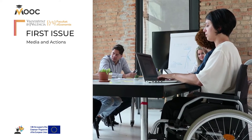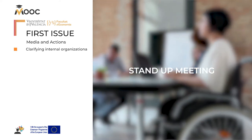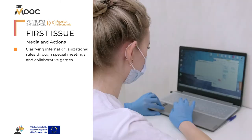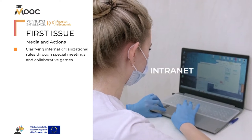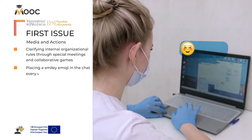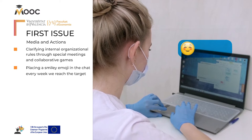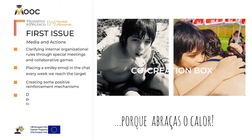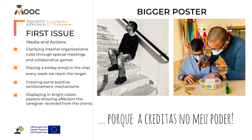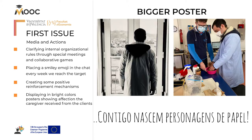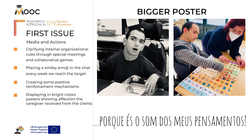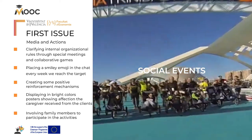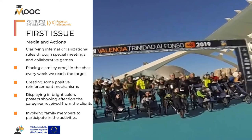To carry out both campaigns, different media and several actions are used: clarifying internal organizational rules through special meetings and collaborative games; setting a no-absenteeism target for the group and placing a smiley emoji in the chat every week we reach the target, with a picture of those who achieved it; creating positive reinforcement mechanisms for the performance of the role; displaying in bright colors posters with emotional pictures showing the importance and affection the caregiver received from clients, hung in large format where everyone can see them; and involving family members to participate in activities and posting photos with each team.